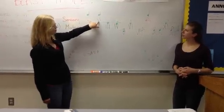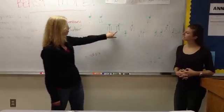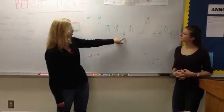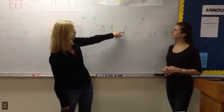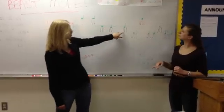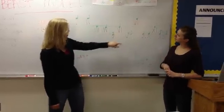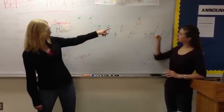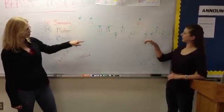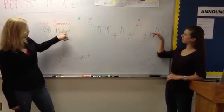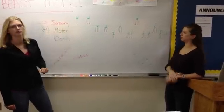So cranial nerves one and two are going to be sensory, three and four motor, five is both, and then we go back up to motor for cranial nerve six, seven is going to be both, eight sensory, and then nine and ten are both, 11 is motor, and 12 is both also.